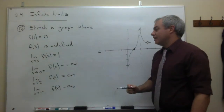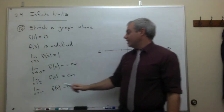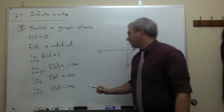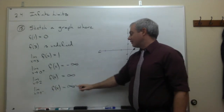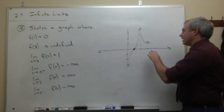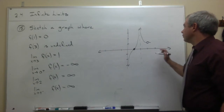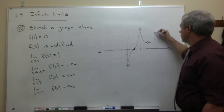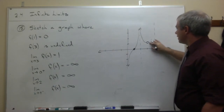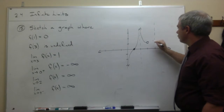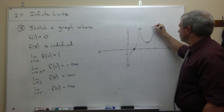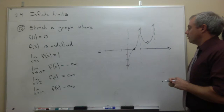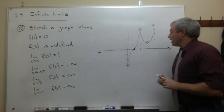The last condition is the limit as x goes to 4 from the left needs to be infinity. So as we get close to x = 4 from the left, the function needs to go up to infinity.